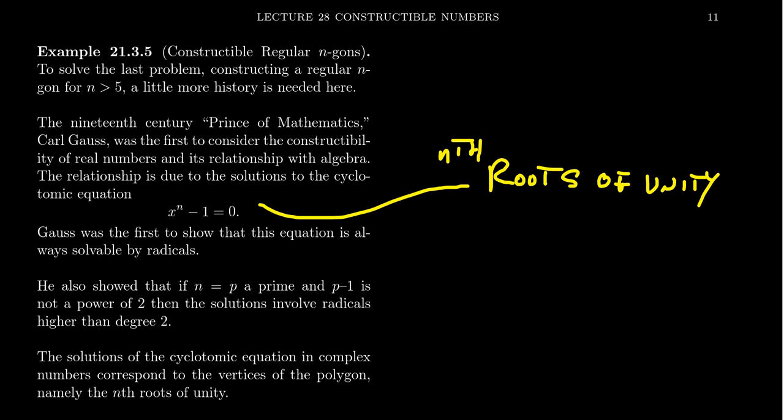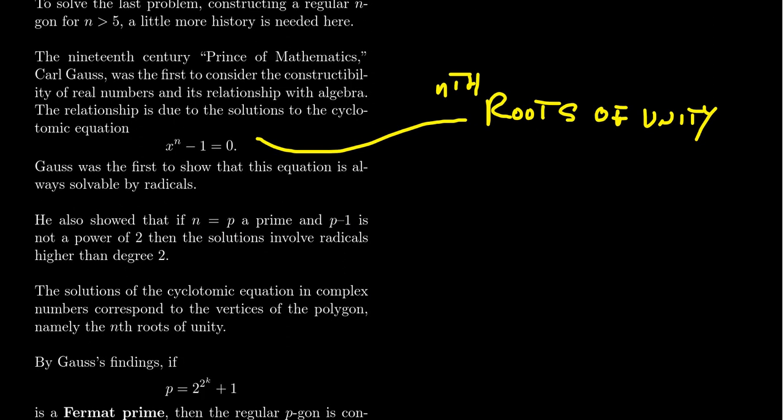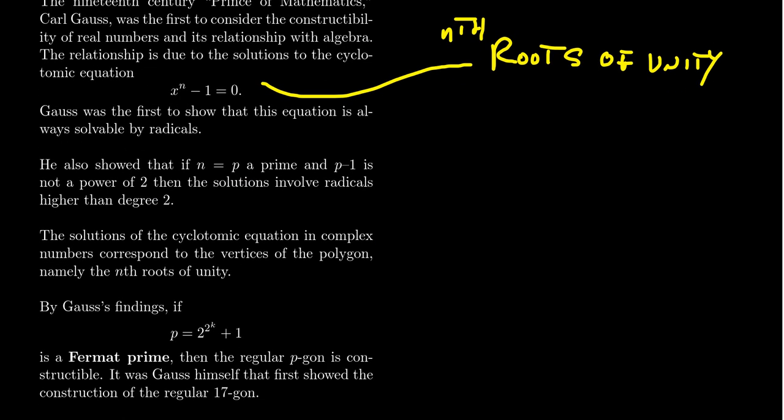He also showed that if n is a prime number and p minus 1 is not a power of 2, then the solutions involve radicals higher than degree 2. The solutions of the cyclotomic polynomial in the complex numbers coincide with the roots of unity.